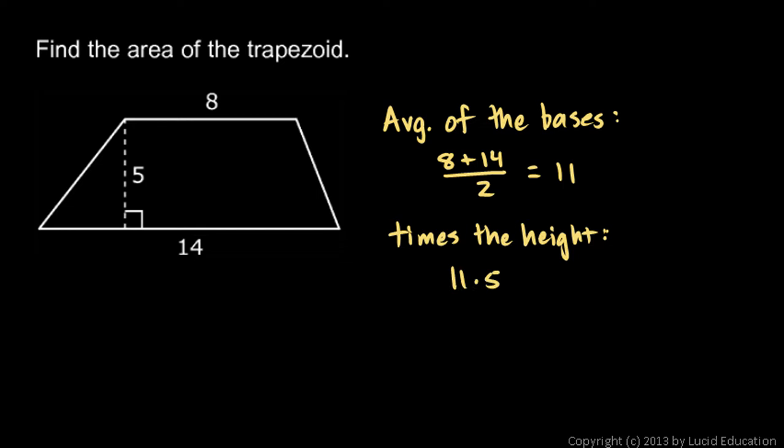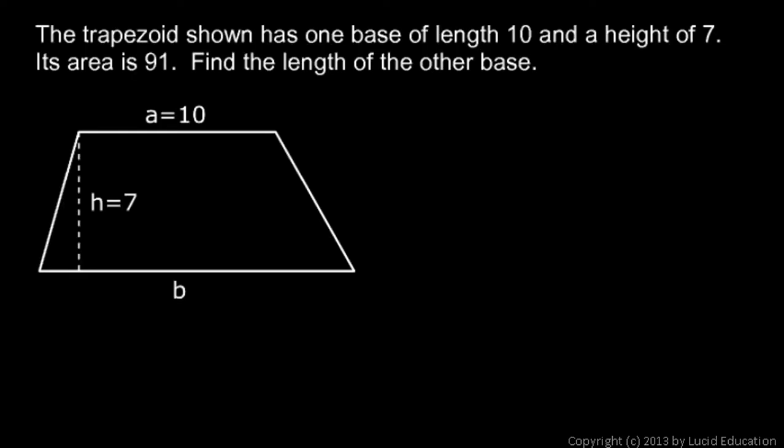And so that's just 11 times 5 is 55. And here's an example that's a little bit trickier. The trapezoid shown has one base of length 10, and the other base here, which we call b, is unknown. And it has a height of 7, and we're given the area. The total area is 91, so we need to find the length of the other base.